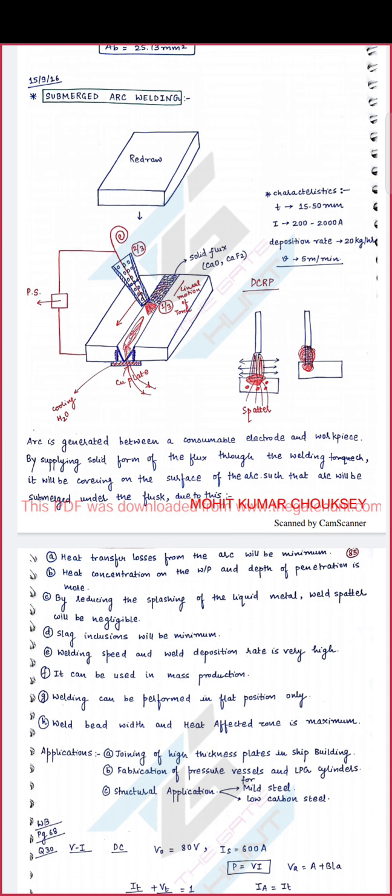Today we will discuss Submerged Arc Welding. It is a type of electric arc welding in which the arc is generated within a molten pool. In this welding, the arc is generated between a consumable electrode and workpiece by supplying solid flux through the welding torch, which covers the surface of the arc such that the arc is submerged under the flux.